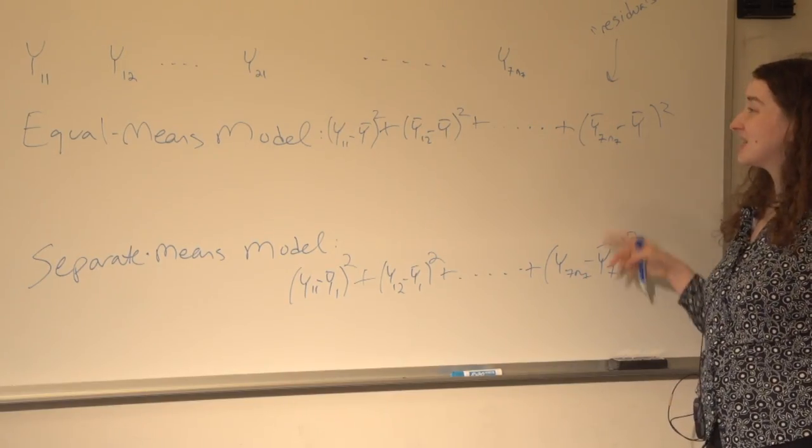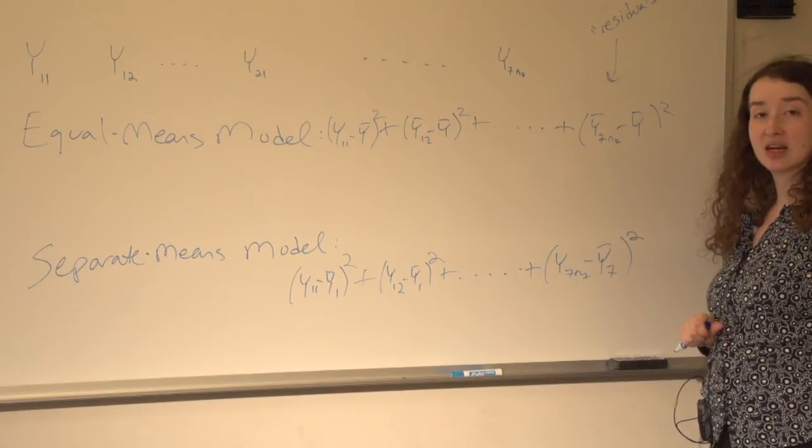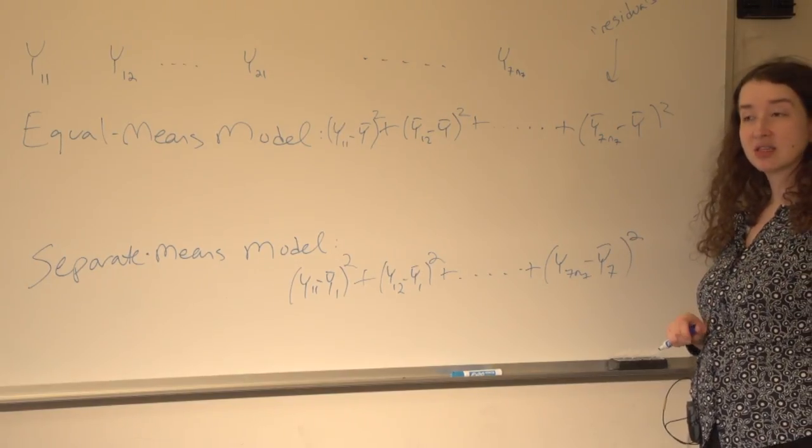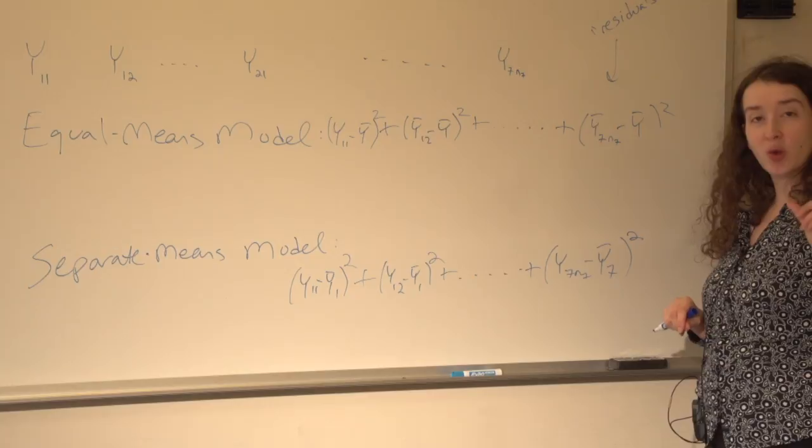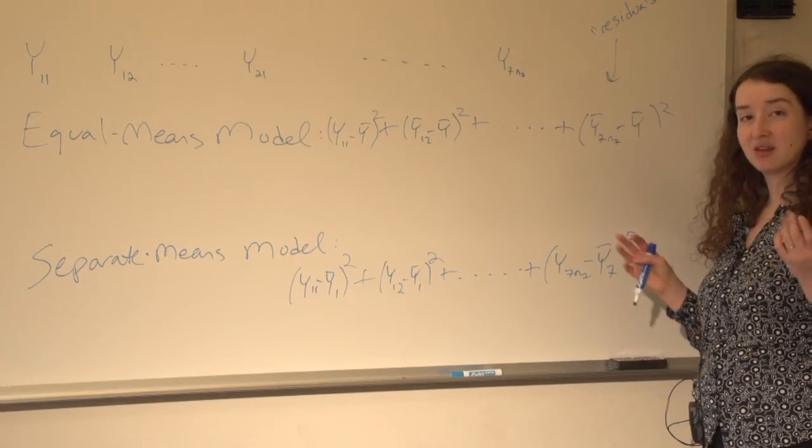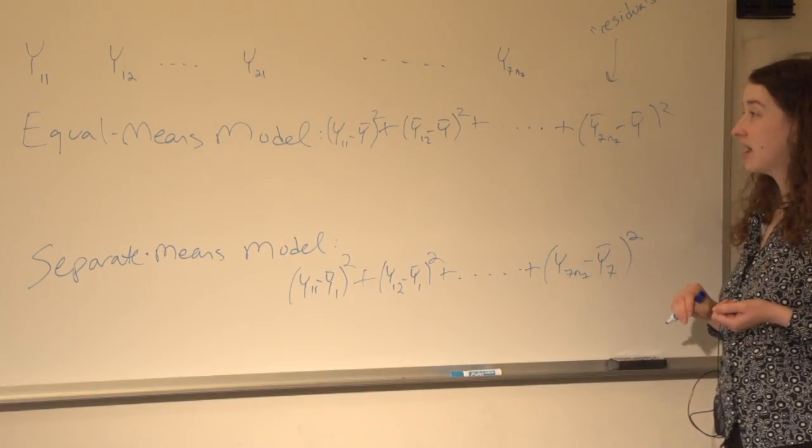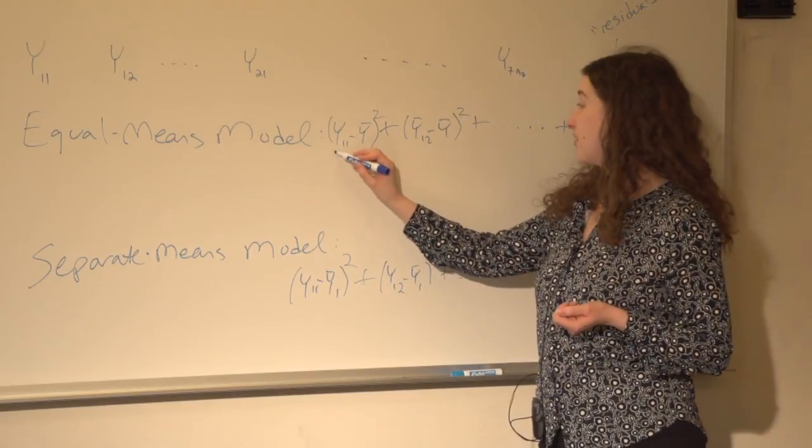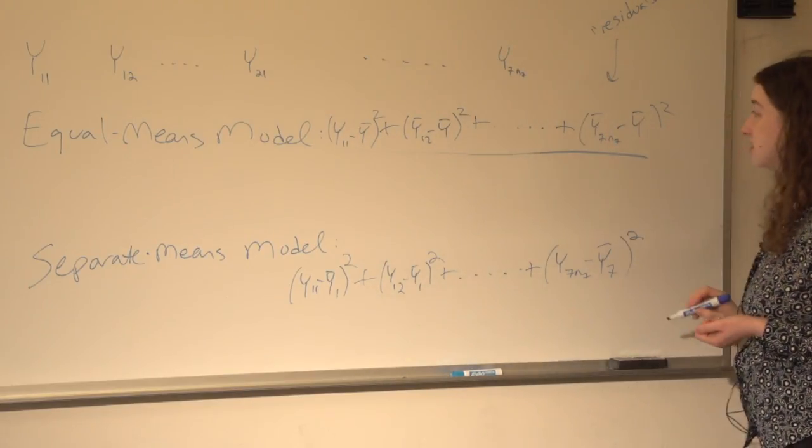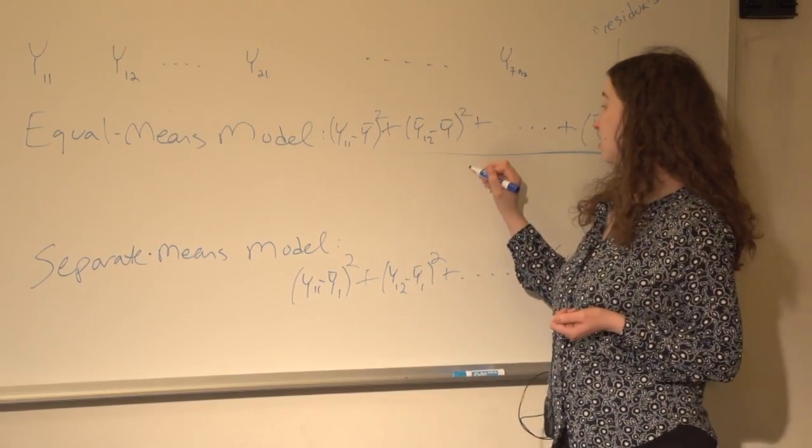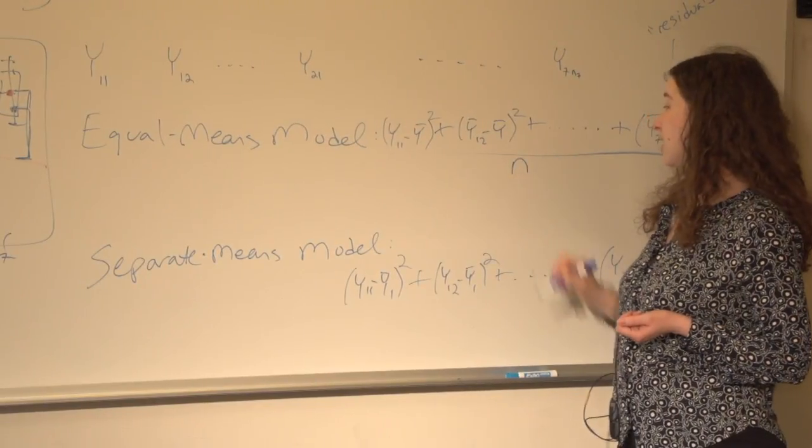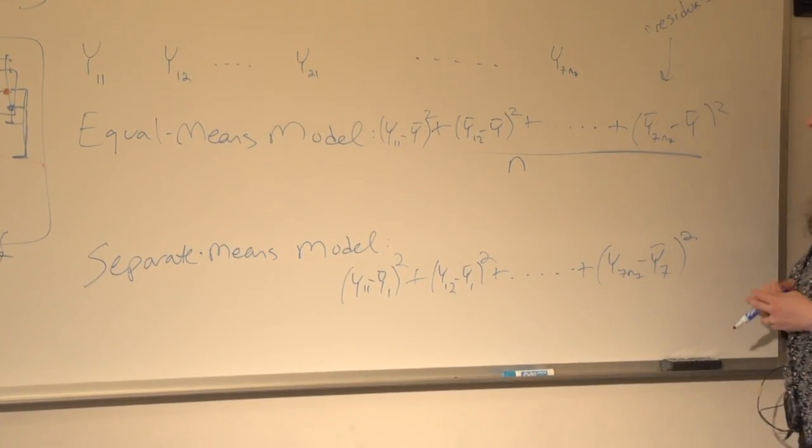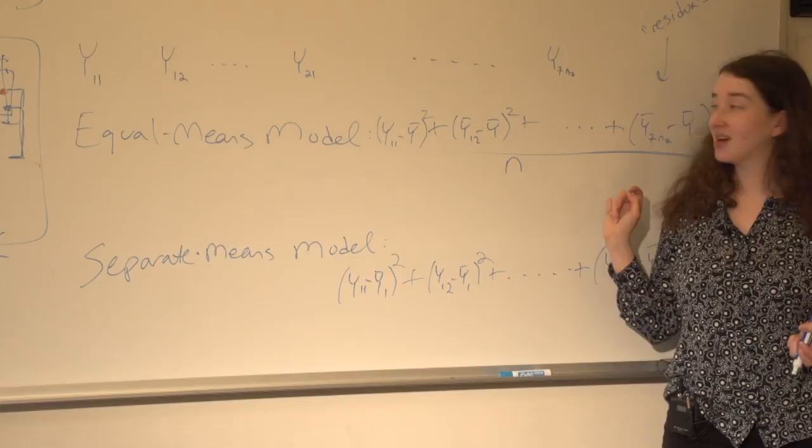Also, you can see that these sums of squares are very related to the concept of variance. What is variance? It's the sum of the squared differences between the points and a mean divided by how many you have. And actually, if I were to take all these data points and divide by the total sample size, I'll use a lower case N there for the total sample size, this is just the variance of all the data points, right?